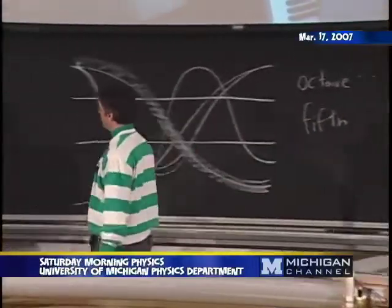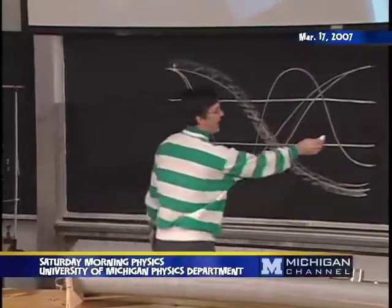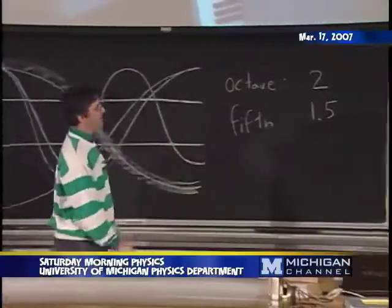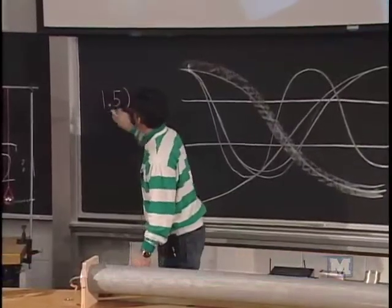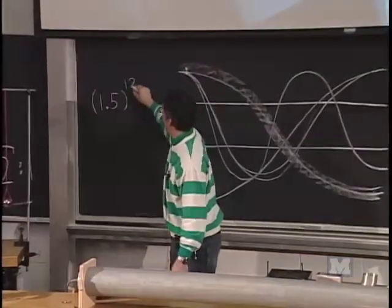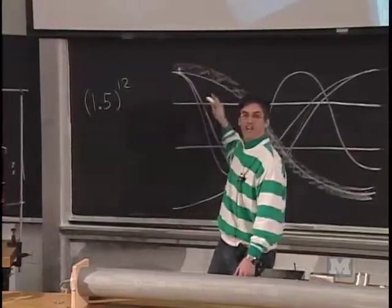And the reason we have 12 notes is that it turns out that if you do fifths 12 times, so 1.5, and you keep increasing the frequency 12 times, that's an exponent. So I'm just multiplying 1.5 twelve times.